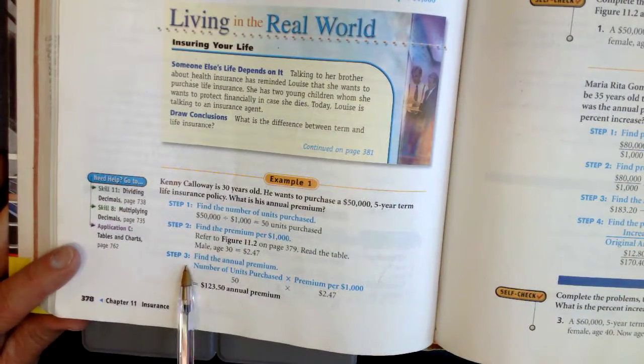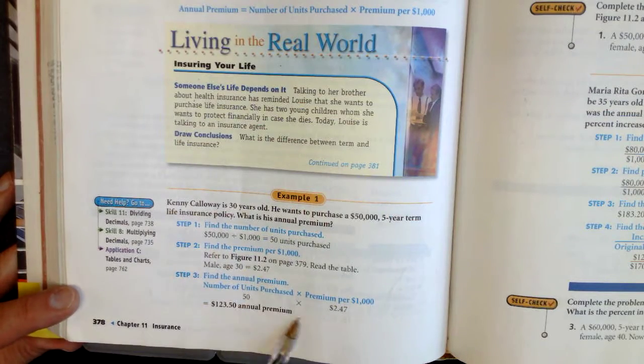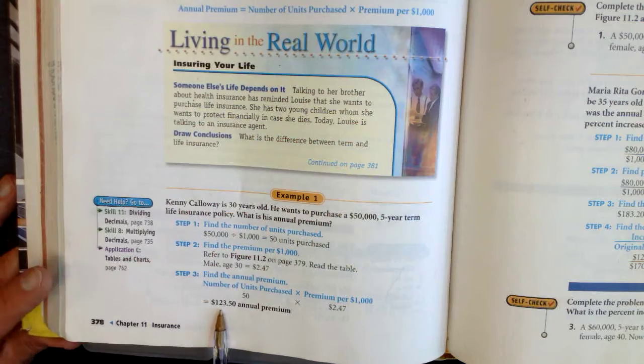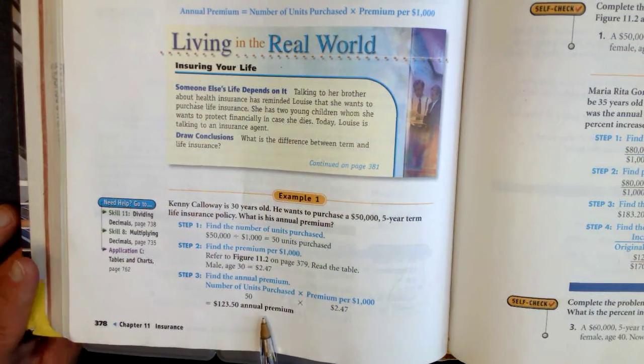Your third step, we're gonna take the number of units, 50, multiply it by the $2.47 we get on the chart, comes out to a total premium for the entire year of $123.50.